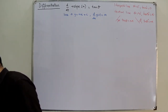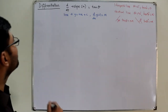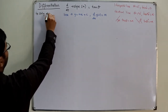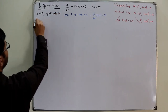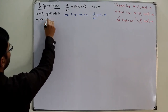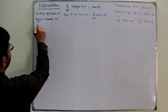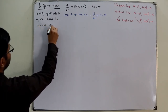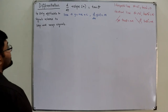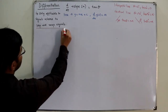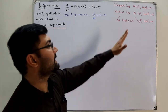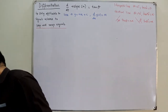From the signals and systems point of view, the differentiation of continuous time signals discussed here is only applicable to signals related to step and ramp functions. A step signal is one that jumps from one value to another; a ramp is a linear function.